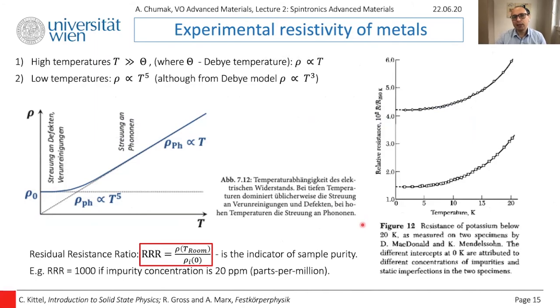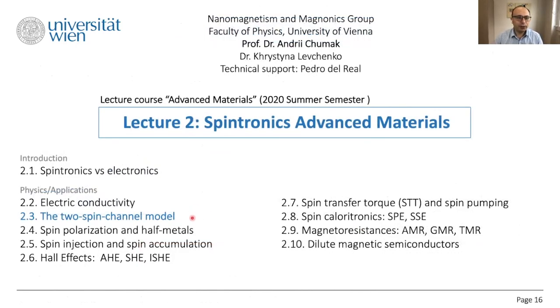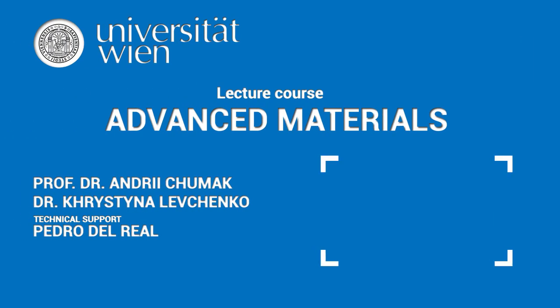That was a refresher of your knowledge about electrical resistivity. We have introduced all these parameters like mobility and conductivity, which we will use in the next part of this lecture. Now we are ready to switch to the two-spin channel model.